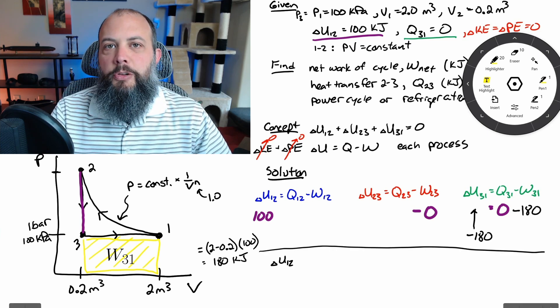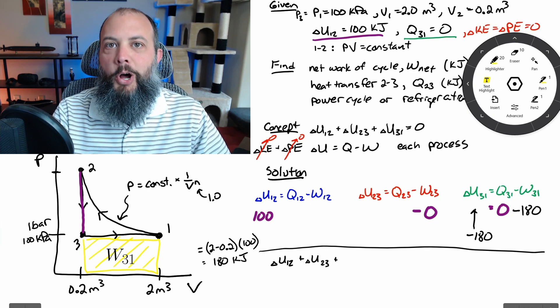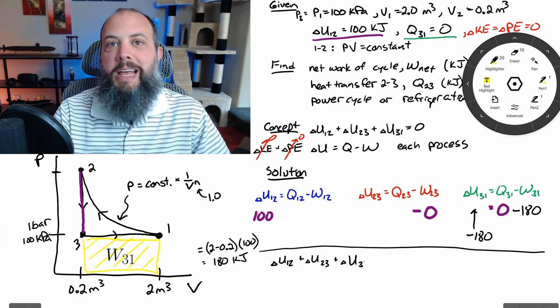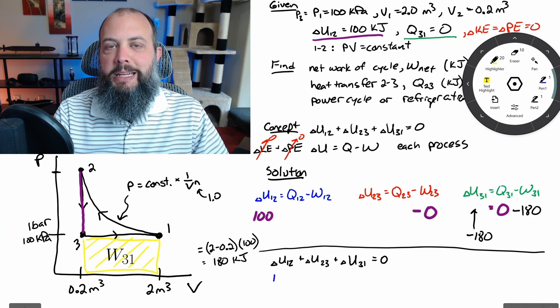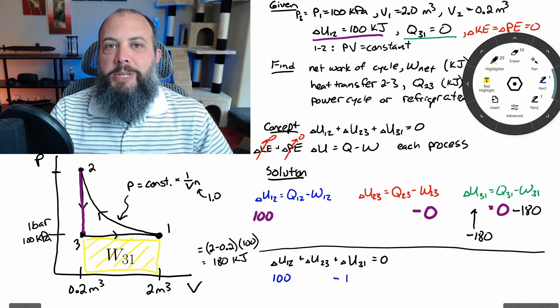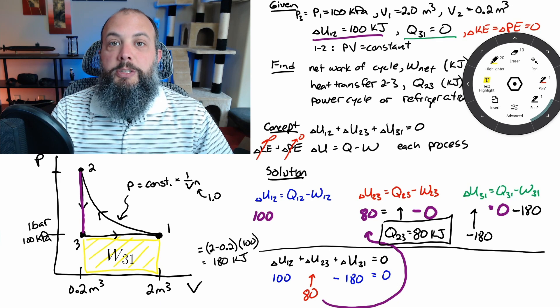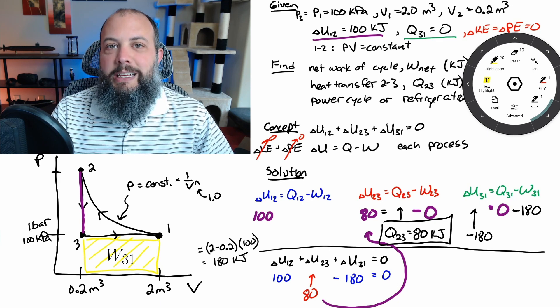Since I now have two of these internal energy terms I can solve for the third one since I know that the sum of all of the changes in internal energy have to add up to zero because it's a cycle meaning that by the time you get back to point one you have to be back where you started and that number works out to be 80 kilojoules which I can plug then into the middle equation and that lets us finish one part of this problem Q23 is 80 kilojoules.